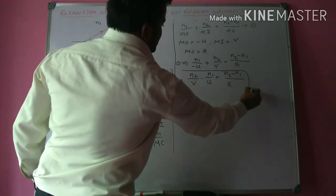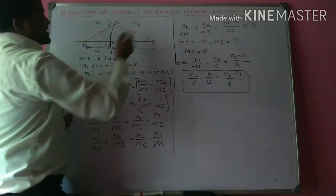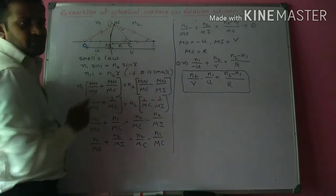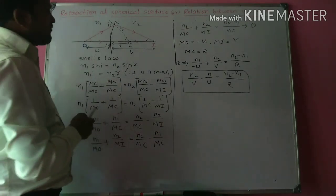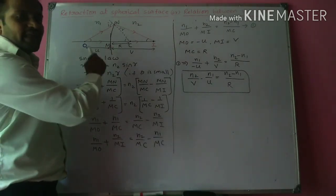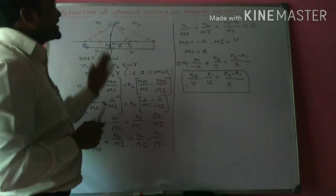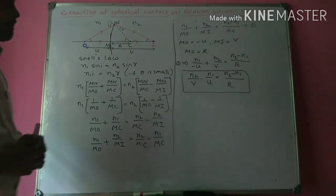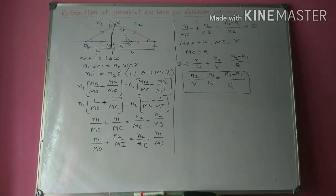Rearranging, we get the final expression: N2/V minus N1/U equals (N2 minus N1)/R. This is the relation between U, V, and R for refraction at a spherical surface, specifically for refraction at a rarer to denser interface. If you have any doubts, you can ask in the comment section. For latest updates, subscribe and click the bell icon. Thank you.